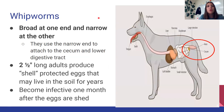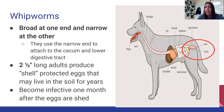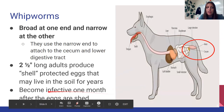Next up we have whipworms. They get their name because they are broad at one end and narrow at the other. They use the narrow end to attach to the cecum — the tiny pouch that connects between the small intestine and the large intestine. Whipworms are a little bigger than hookworms, about two and a half inches long. These guys are really difficult to get rid of because their eggs have a very protective shell that can live in the environment for years, just waiting for an animal to come by and eat them. Once eggs are eaten, they can infect the host within about a month.